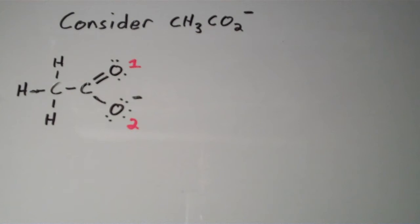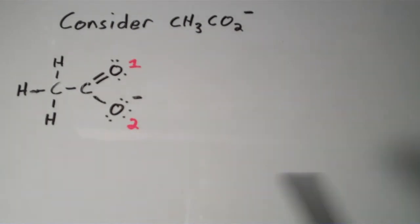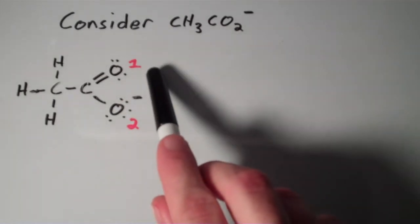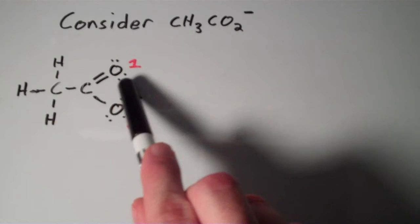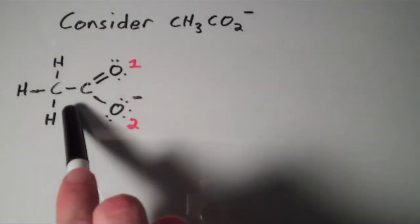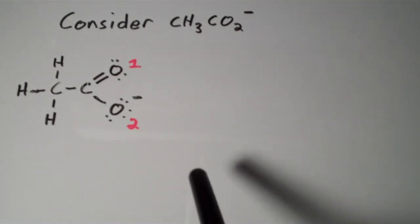This compound has a name, we call it the acetate ion, it's the conjugate base of acetic acid. So if you drew this Lewis structure out and you followed all the rules correctly, then you'd end up with a Lewis structure that looks like this. The interesting thing about this Lewis structure is that we have two oxygens that are non-equivalent as shown. Oxygen 1 is doubly bonded to the carbon and has a formal charge of 0, while oxygen 2 is singly bonded to this carbon and has a formal charge of minus 1.